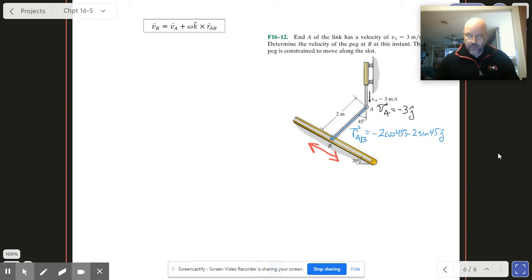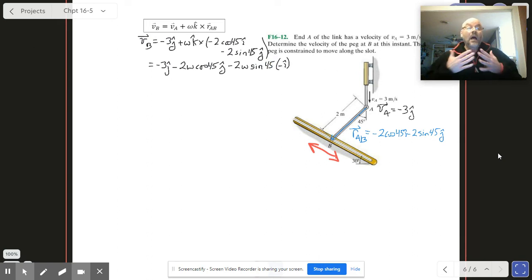So VB equals VA, which we said was minus 3J, plus omega K crossed with minus 2 cosine 45 I hat minus 2 sine 45 J hat. Let's go ahead and execute that cross product: minus 3J minus 2 omega cosine 45 J hat and minus 2 omega sine 45 I hat.